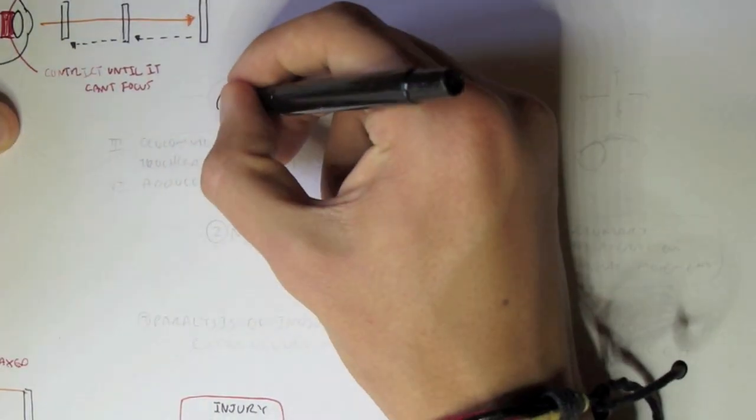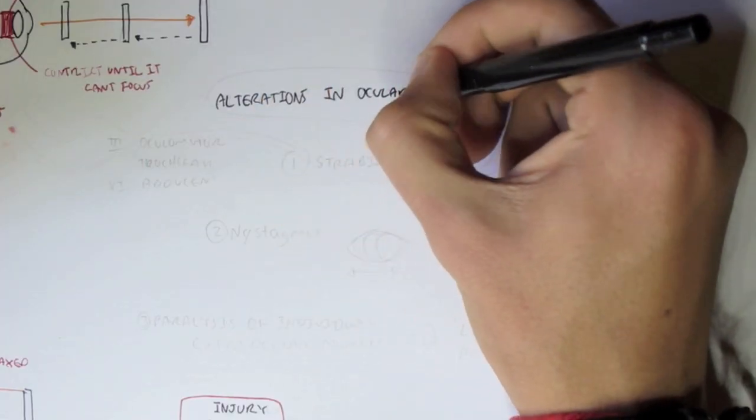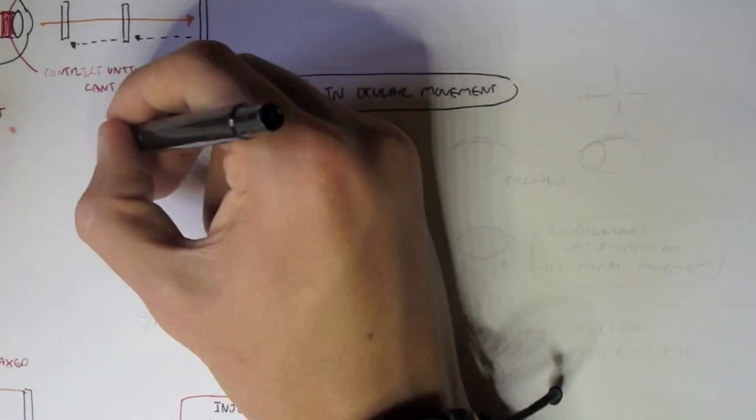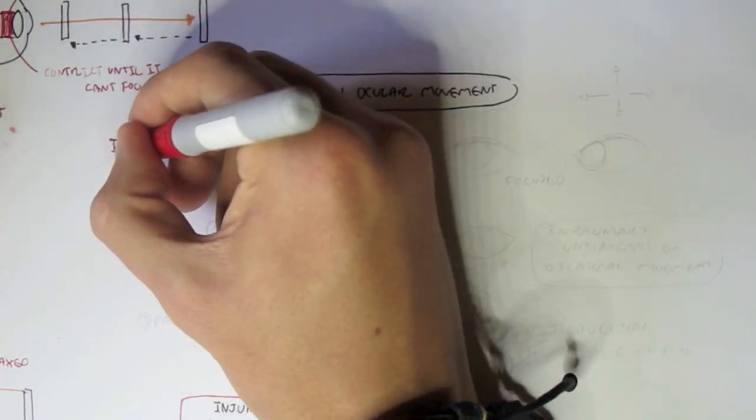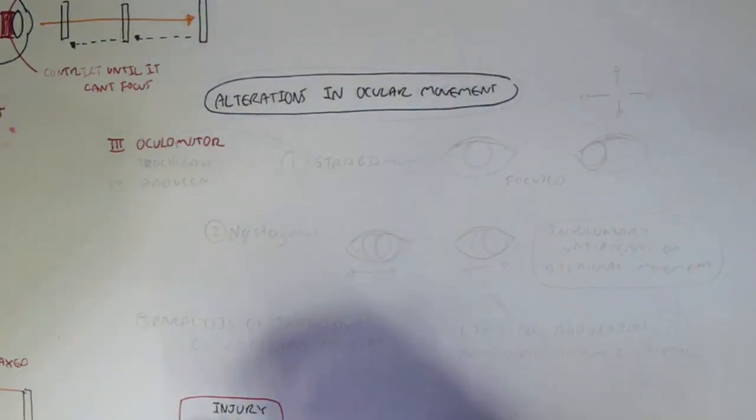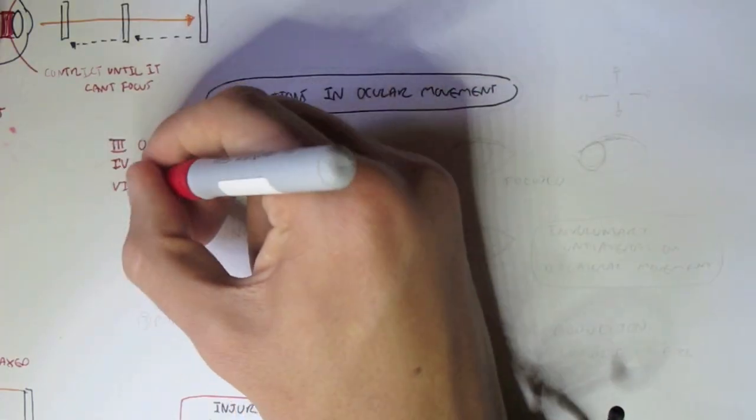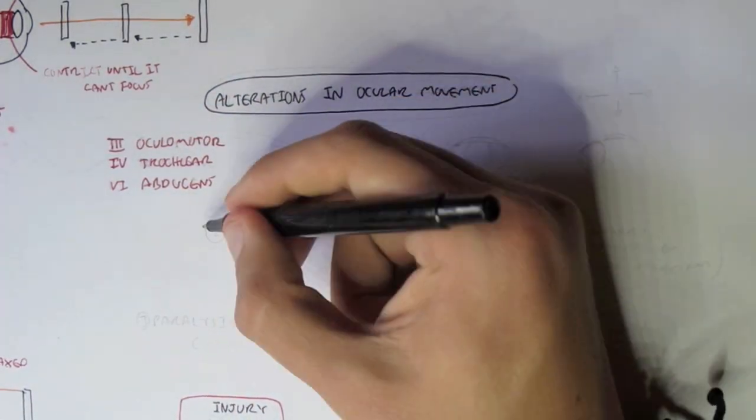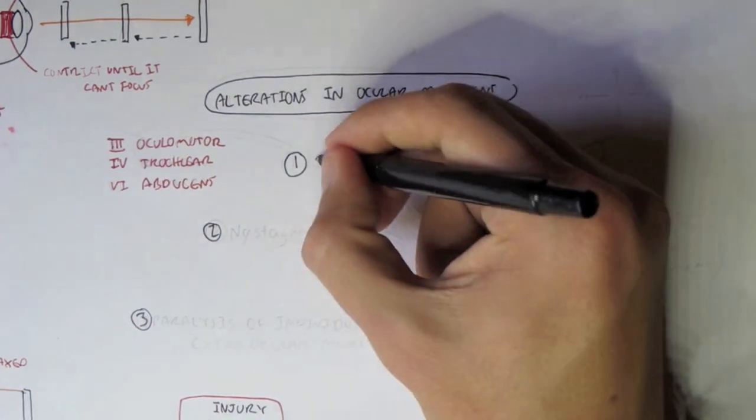Next, there is alterations in ocular movement. And alterations in ocular movement basically means when there's damage to the cranial nerves, certain cranial nerves. Especially cranial nerve 3, the oculomotor, nerve 4, trochlear, and nerve 6, the abducens nerve.